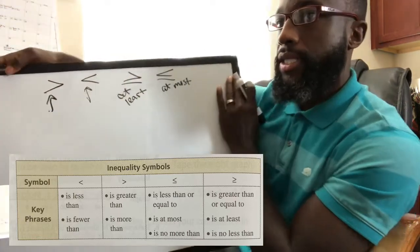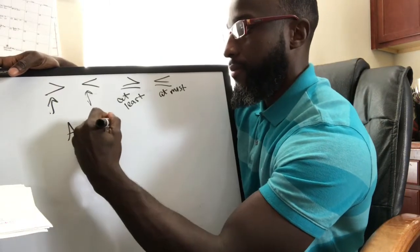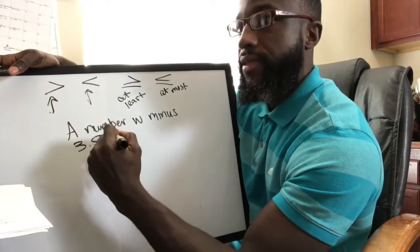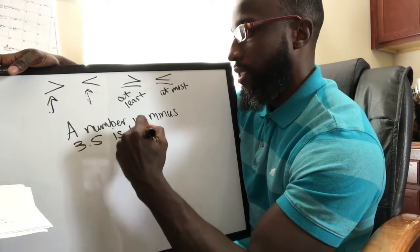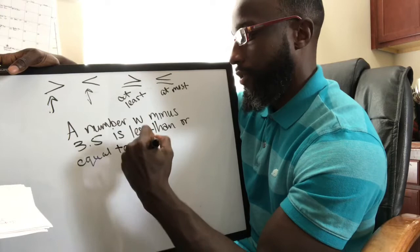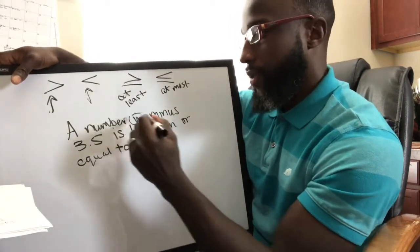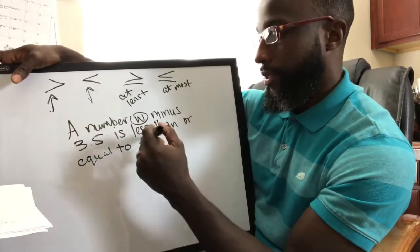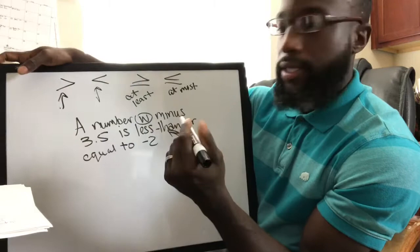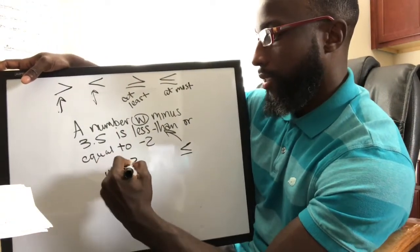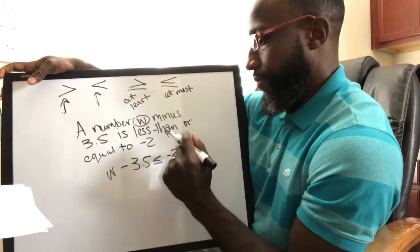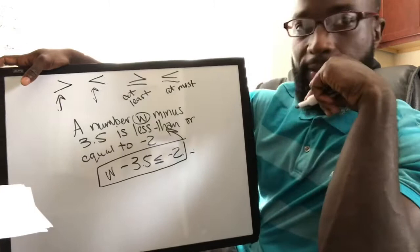So if we look at this question — a number W minus 3.5 is less than or equal to negative 2. W is our variable, minus means subtracted, and less than or equal to looks like this. So to write this as a linear inequality: W − 3.5 ≤ −2. There you have it.